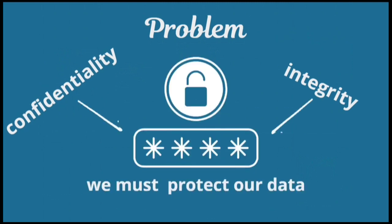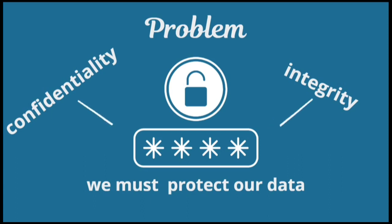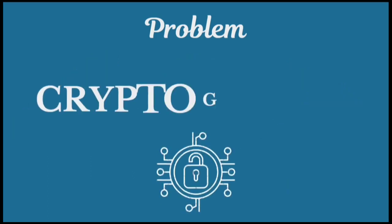including confidentiality and integrity. Therefore, securing or encoding the message before it is sent to the recipient is necessary, so that the data sent can be kept confidential and not easily changed by anyone to maintain the integrity of the message. In this video, we will discuss how to secure a message or data. The science that studies the ways of securing data is known as cryptography.